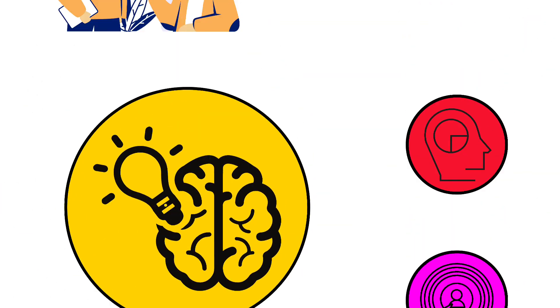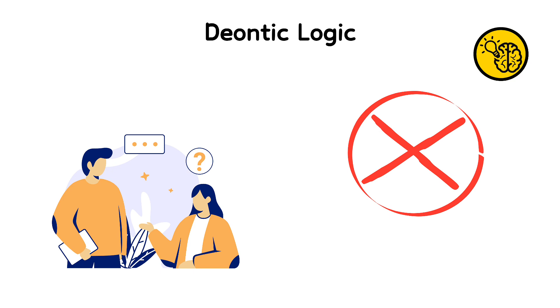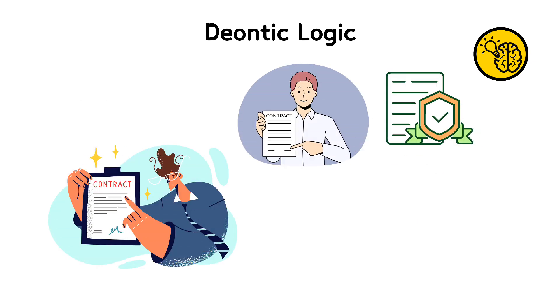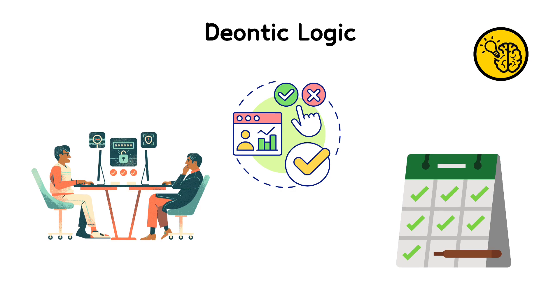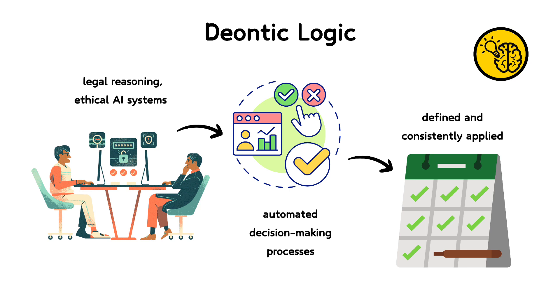Deontic logic is the study of normative concepts such as obligation, permission, and prohibition. It's key in understanding legal and ethical statements. For instance, the statement you must not drive over the speed limit can be represented in deontic logic to analyze and infer other legal obligations or permissions. This type of logic is widely used in legal reasoning, ethical AI systems, and automated decision-making processes where rules and duties need to be clearly defined and consistently applied.